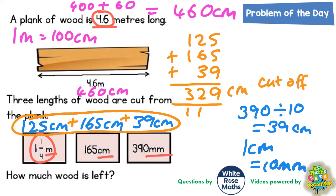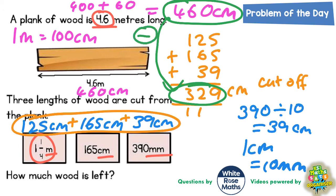Now we need to figure out what we've got left. Well, the last step is to take what we started with, which was 460, and cut off the 329, so we need to do a subtraction: 460 take away 329, and whatever this leaves us with will be the amount of wood which is left.